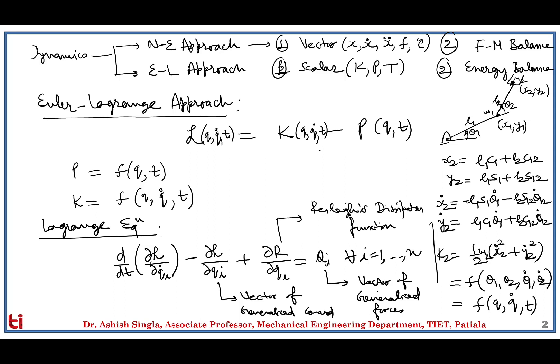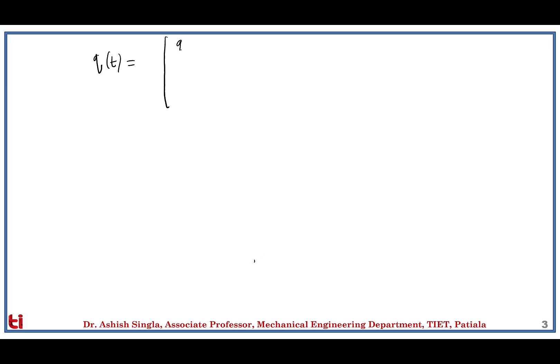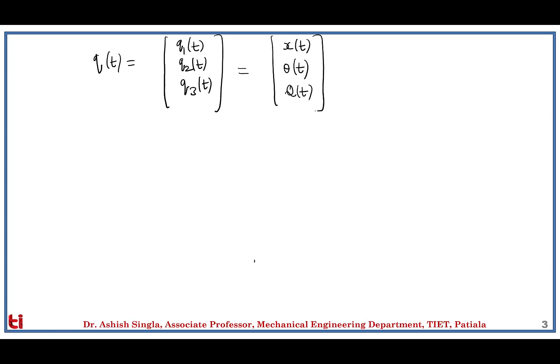We use the word 'generalized' because most real-life systems today are mechatronic, involving contributions from mechanical, electrical, electronic, and computer domains. The vector q represents the equivalent displacement variable from each domain. For a three-DOF system, q1, q2, q3 may represent three different subsystems: q1 may be linear displacement, q2 may be rotary displacement, and q3 may represent electric charge. All three represent displacement in their respective domains, hence the term 'generalized displacements' — even though their units differ (meters, radians, coulombs).